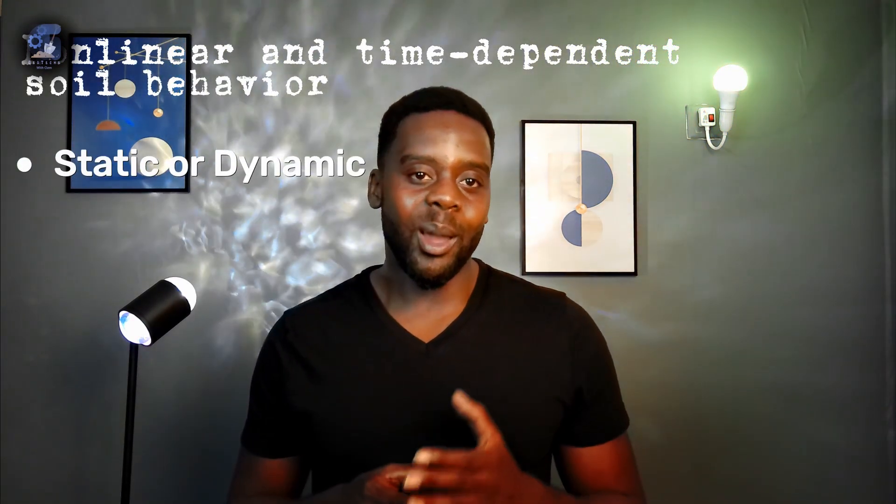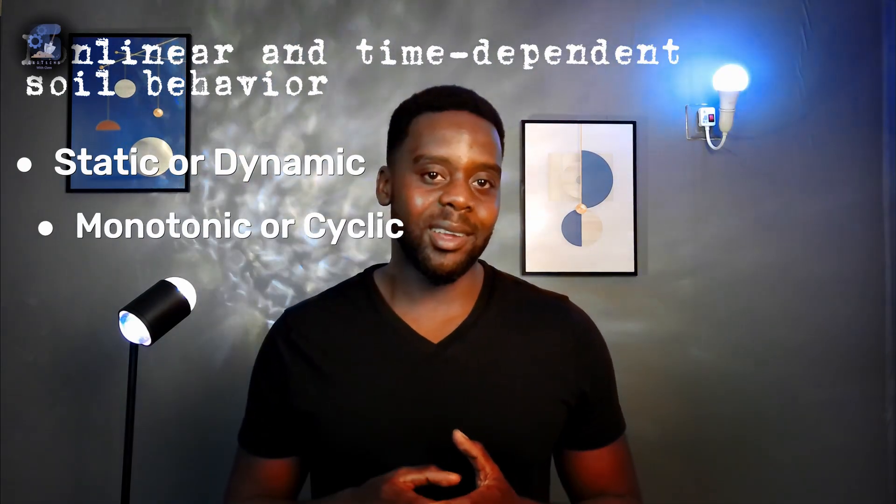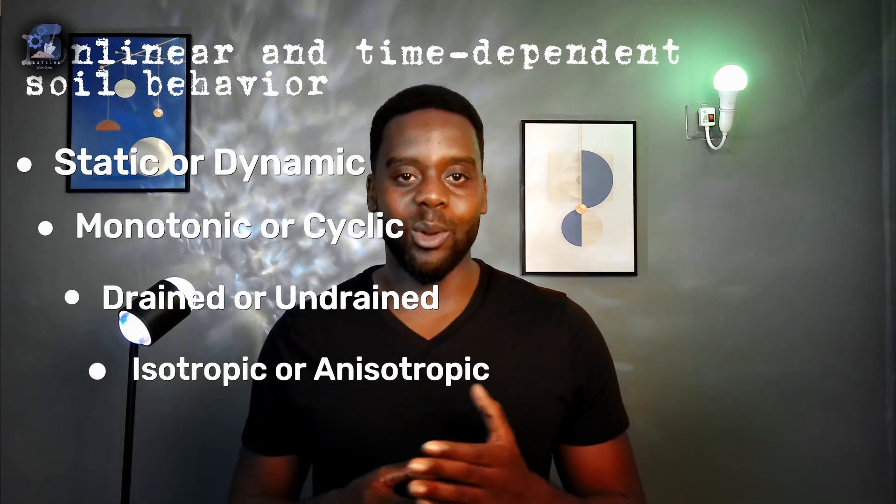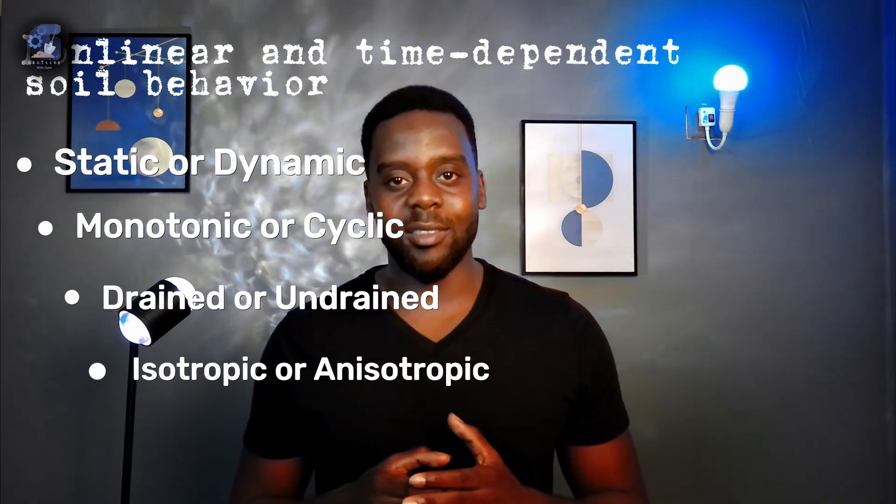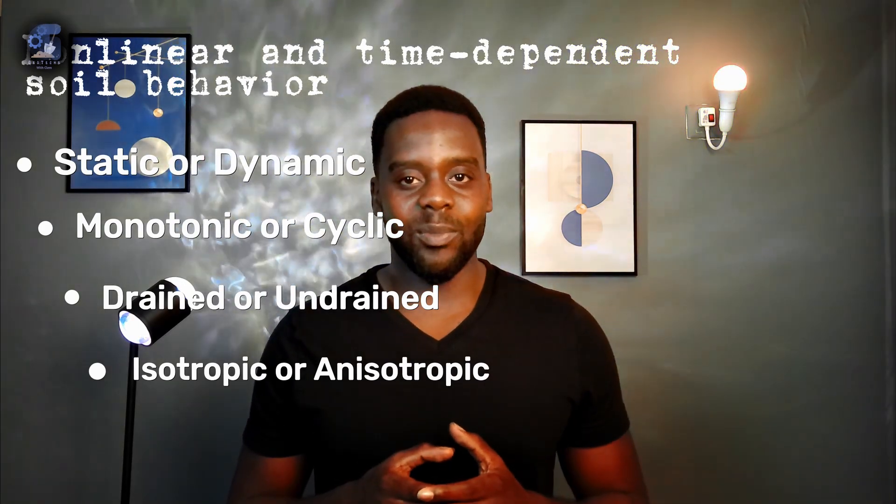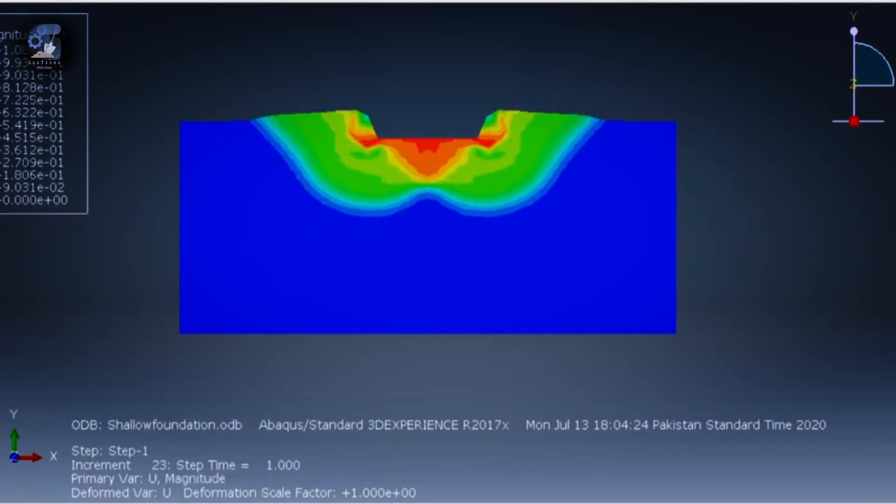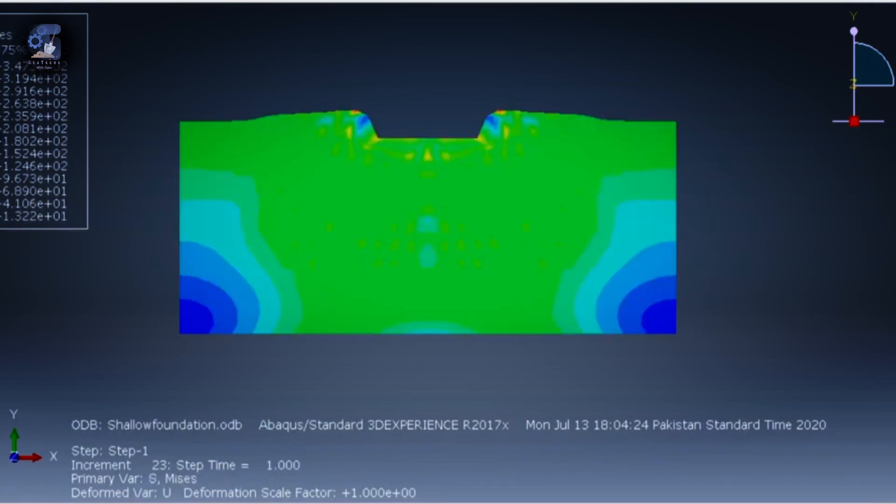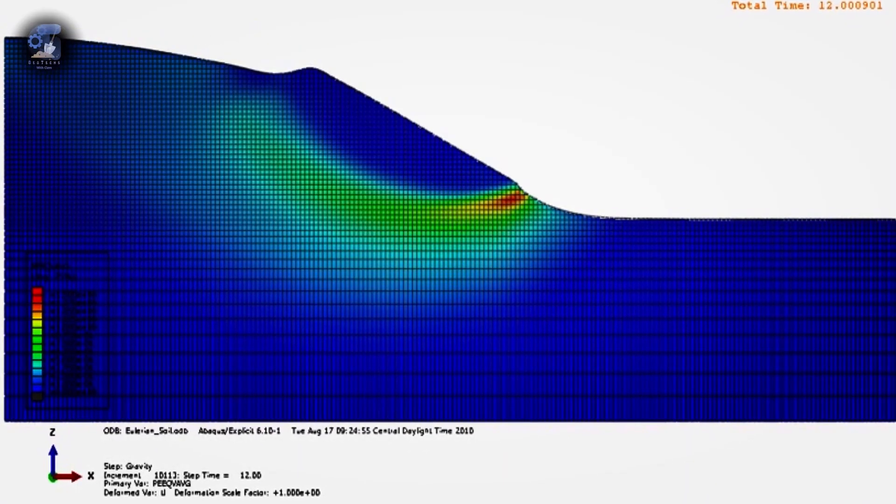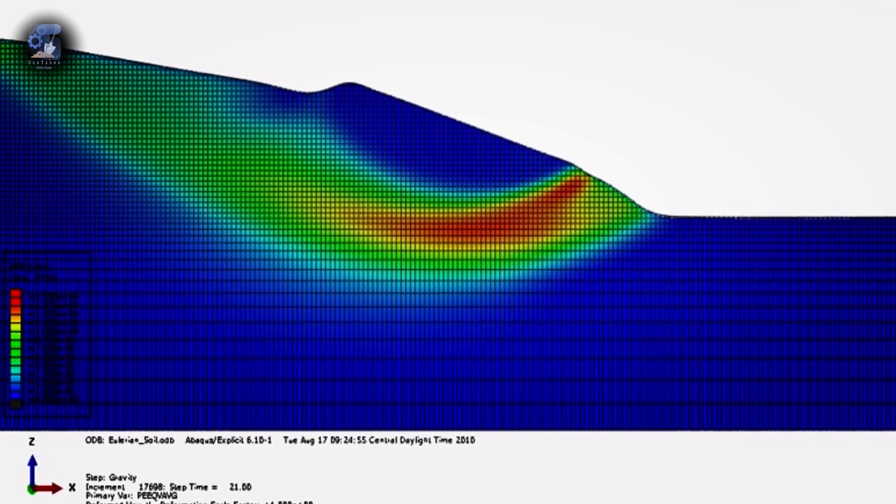under static or dynamic, monotonic or cyclic, drained or undrained, isotropic or anisotropic load conditions for foundations, embankments, slopes, tunnels, and excavations. This can generate control plots to show the distribution of the Cam-clay equivalent stresses and strains at a desired location, as this allows the areas at risk of failure to be identified.